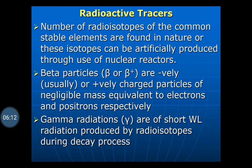The number of radioactive isotopes of the common stable elements are found in nature, or these isotopes can be artificially produced through the use of nuclear reactors. Beta particles are the negatively or positively charged particles of negligible mass equivalent to electrons and positrons. Gamma radiations are short wavelength radiation produced by radioisotopes during the decay process.